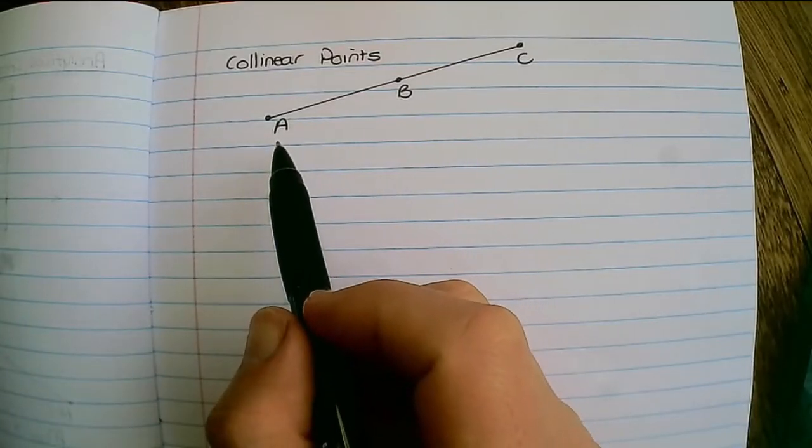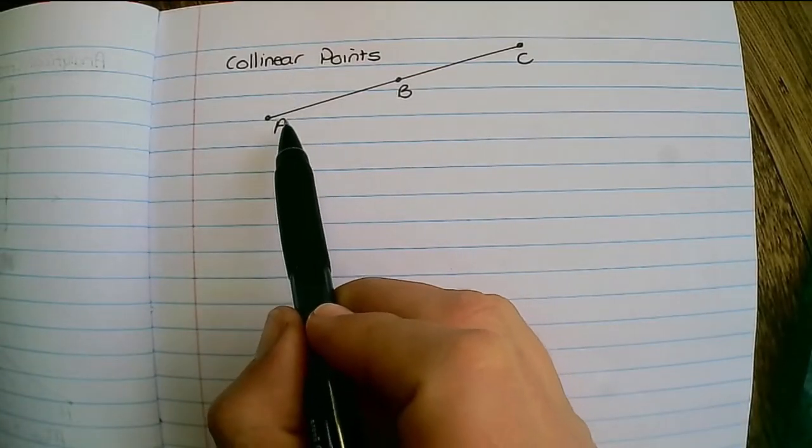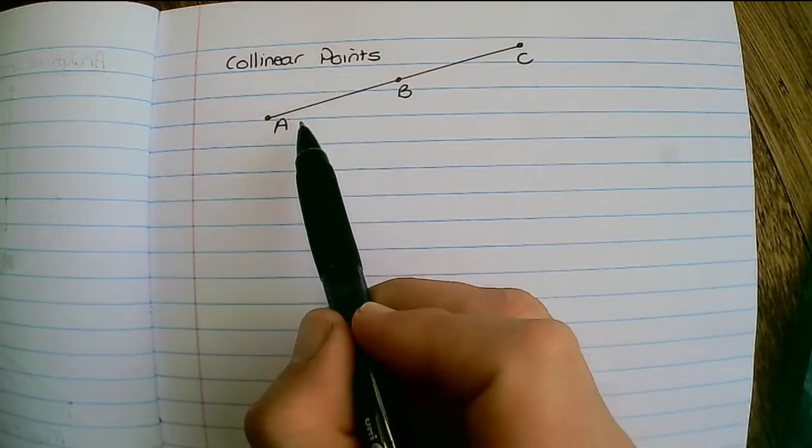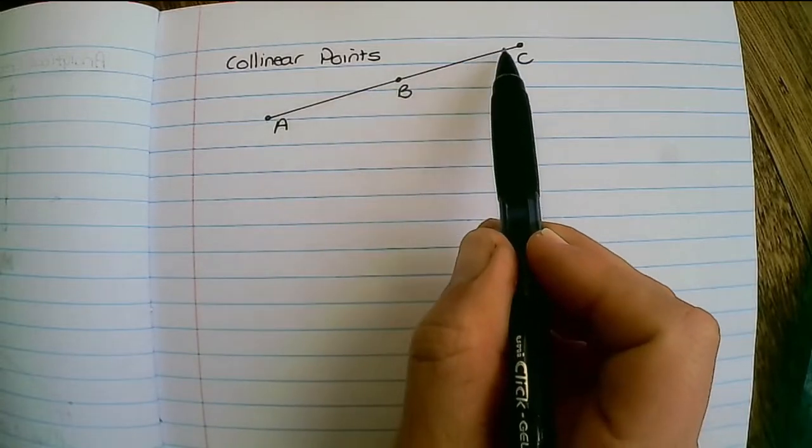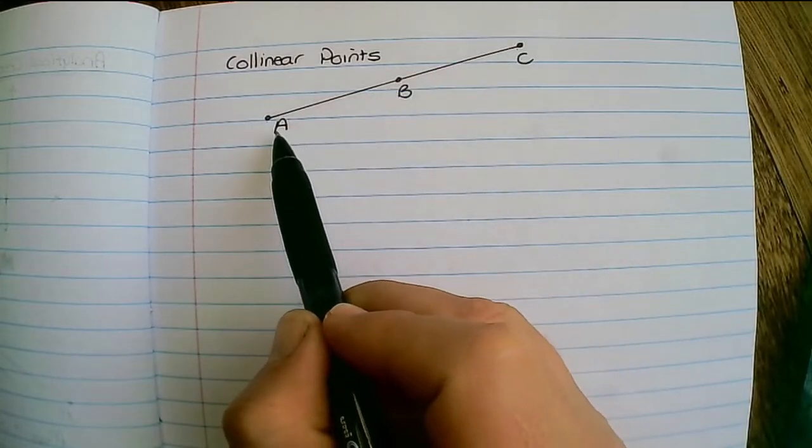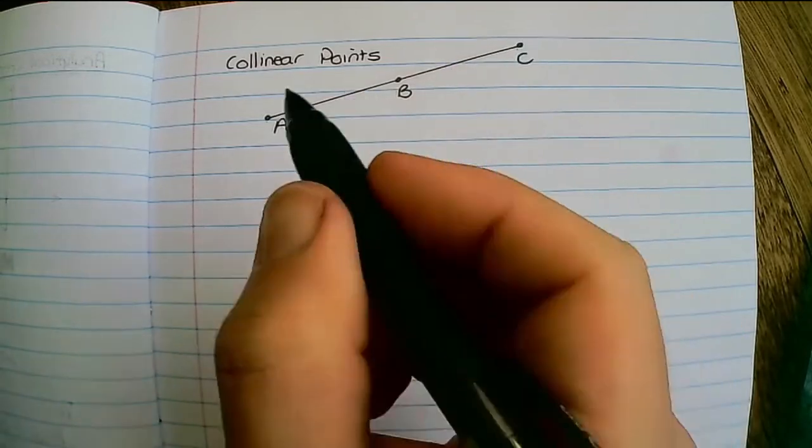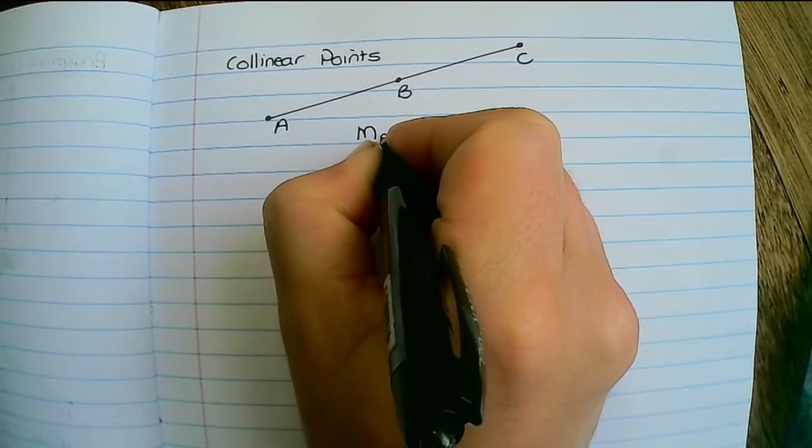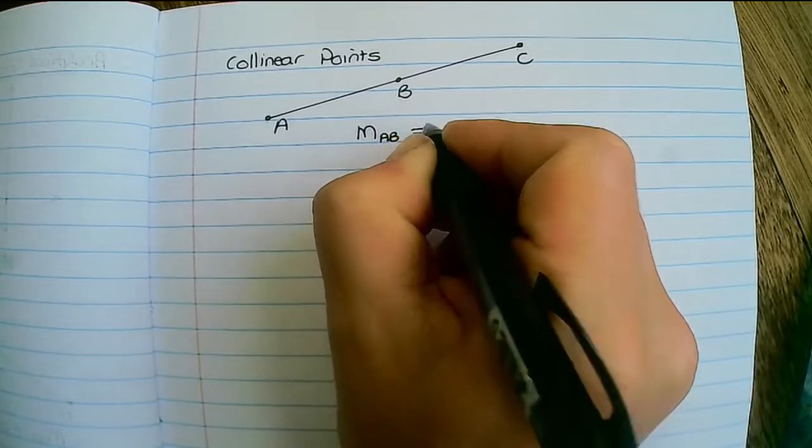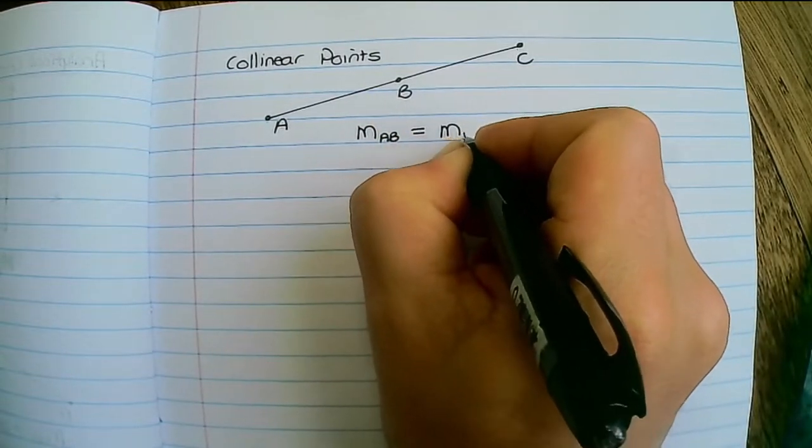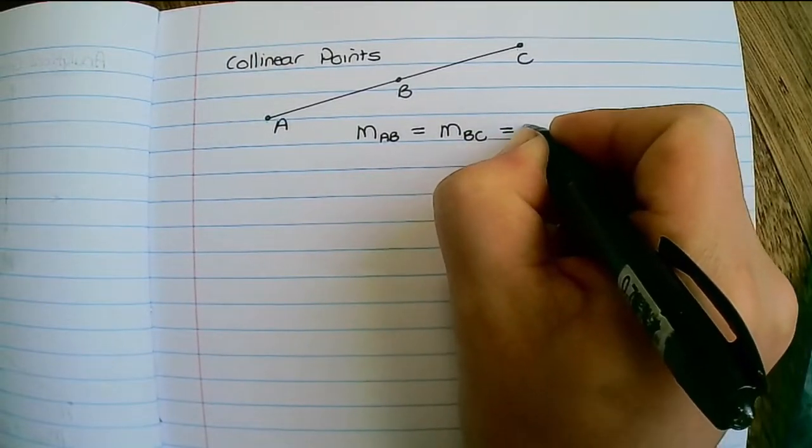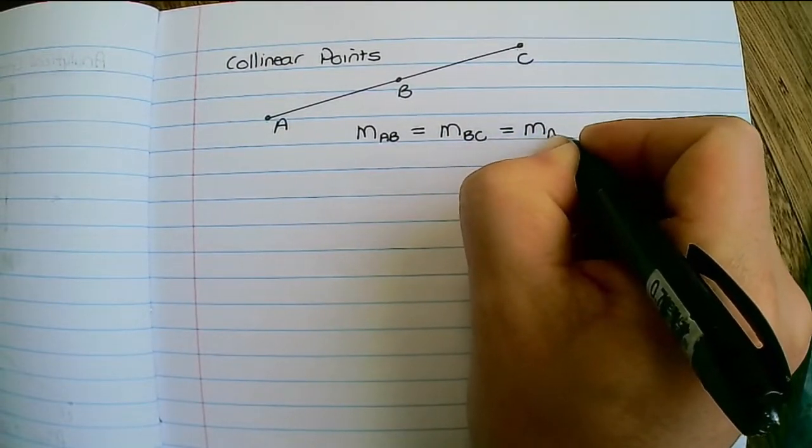And lastly, before we get into a few examples, we can see that collinear points - those are points that are on the same line - have the same gradient. So therefore I can say that the gradient of AB would be equal to the gradient of BC, and that will be equal to the gradient of AC.